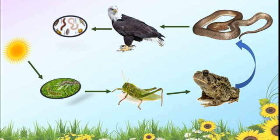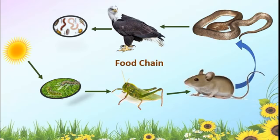Each one is a link. Here, we can replace the frog with the mouse. The grasshopper eats grass, and the mouse eats grasshoppers. You know that mouse is good food for snake, and snake is the food for eagle. When eagle dies, the microorganisms feed on it. This is one of the food chains.